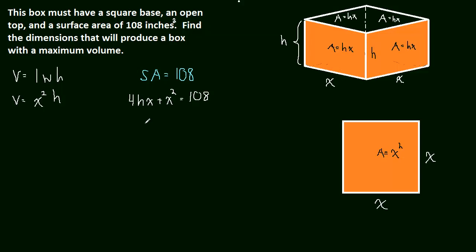So let's just do that. This will become 4hx equals 108 minus x squared. And then h is equal to 108 minus x squared all over 4x. I'm just going to split them up into two fractions. So this is going to be h equals 27 over x minus x over 4. So we figured out h in terms of x. Now we're going to take h and just plug it in, and we'll have volume in terms of only x.